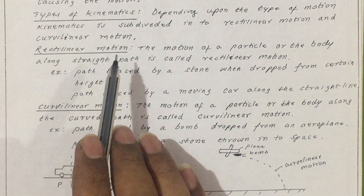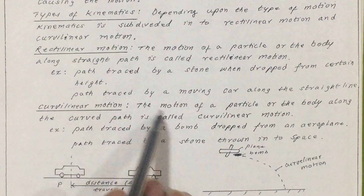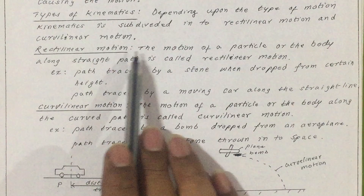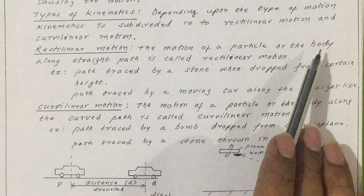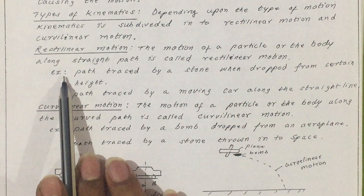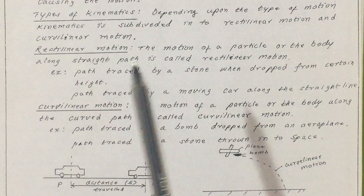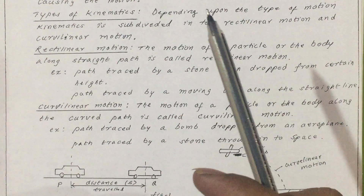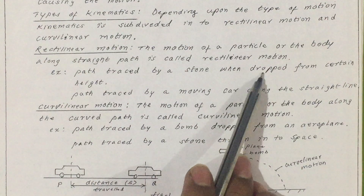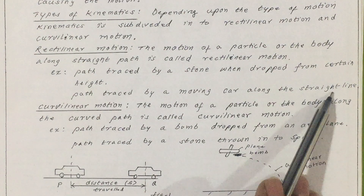What do we mean by rectilinear motion? In simple words, rectilinear means straight line motion; curvilinear means curved motion. The motion of a particle or body along a straight path is called rectilinear motion. An example is the path traced by a stone when dropped from a certain height — if you drop a stone from a three or four storey building, it will go straight. Another example is the path traced by a moving car along a straight road.